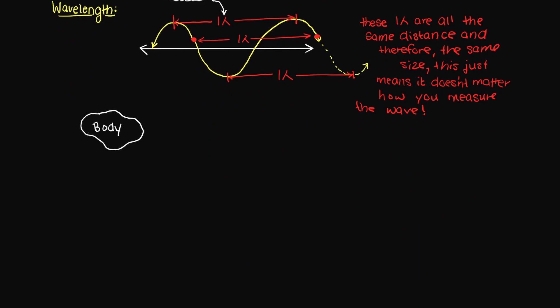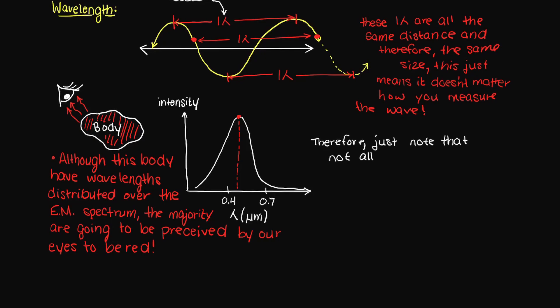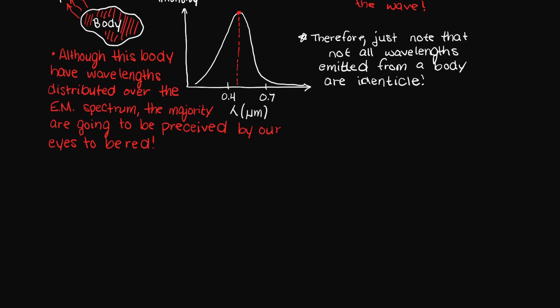Well first, let's cover one thing. If you remember in our previous video, we talked about how all objects above absolute zero emit thermal radiation. However, every object will emit radiation over a wide distribution of wavelengths, and not just one single wavelength. I just want you to recognize that not all wavelengths emitted from our body are identical, we will just focus on the size of the majority of the wavelengths.